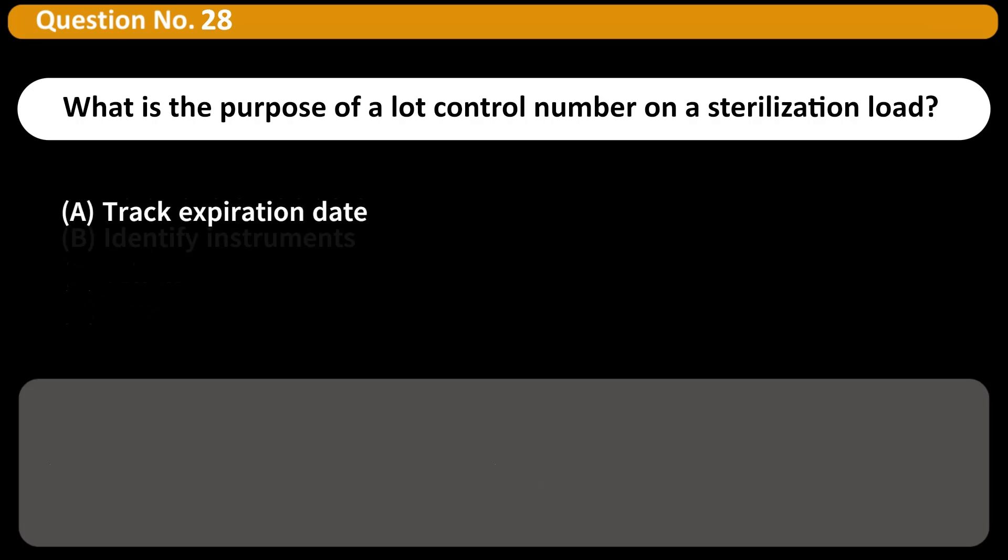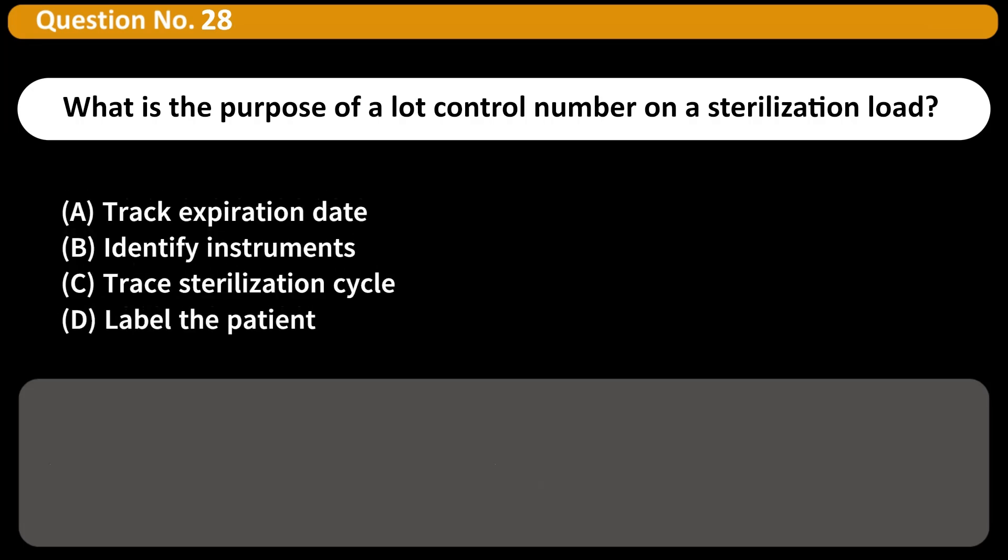What is the purpose of a lot control number on a sterilization load? A. Track expiration date, B. Identify instruments, C. Trace sterilization cycle, D. Label the patient. Answer C. Lot control numbers help trace instruments back to a specific sterilization cycle.